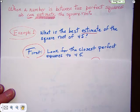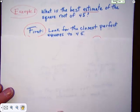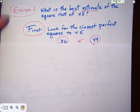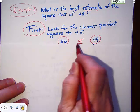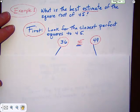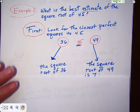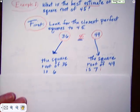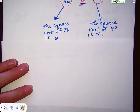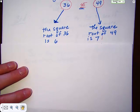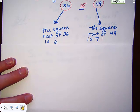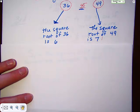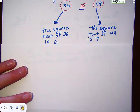We're looking for the closest perfect squares, which we found: 36 and 49. We're going to place 45 in between those two. By looking at the chart, the square root of 36 is 6, and the square root of 49 is 7. So, somewhere between 6 and 7 will be an estimate of the square root of 45.